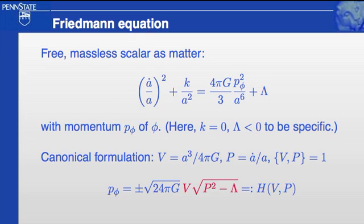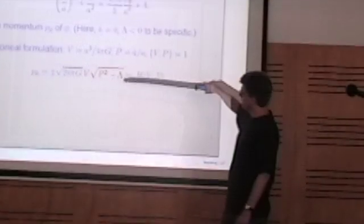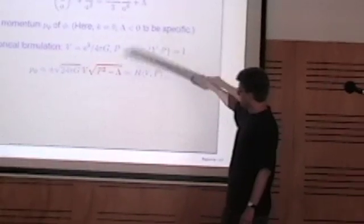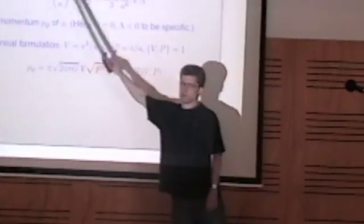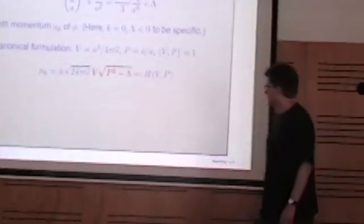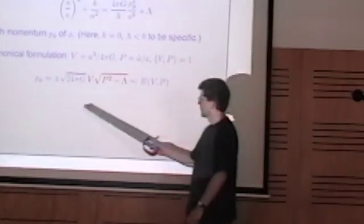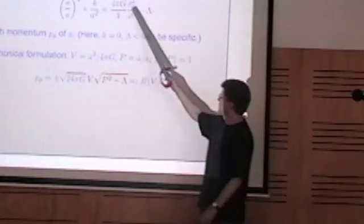And that equation has been best formulated in canonical variables as a first step toward quantization. And it also turns out to be useful to immediately get rid of coordinate times like the dot here, which is proper time, and introduce one of the matter fields, or in this case the free scale.